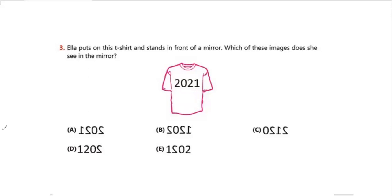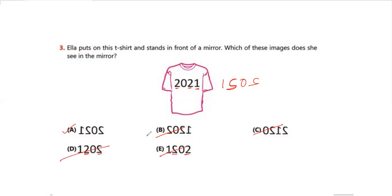Question 3: Ella puts on a t-shirt and stands in front of the mirror. Which image does she see? In a mirror there is always lateral inversion — whatever is on the right appears on the left. So the mirror image will start with a '1' on the right side. We can eliminate B and C. Looking at the options, in a mirror image the numbers appear reversed and flipped, so the answer is option A.